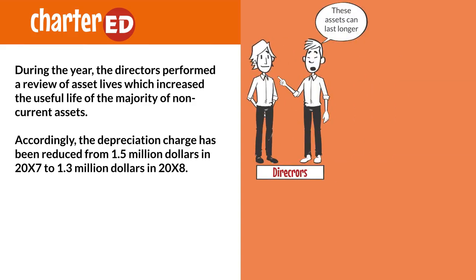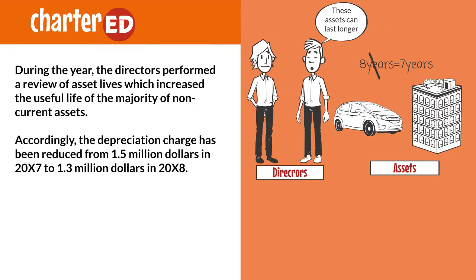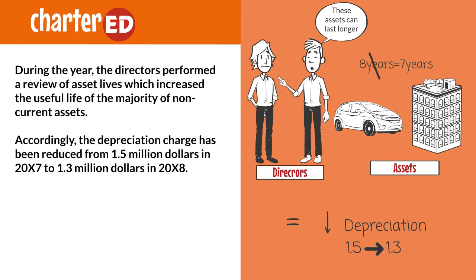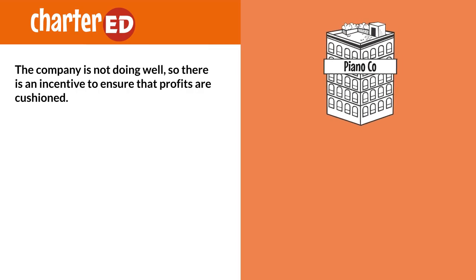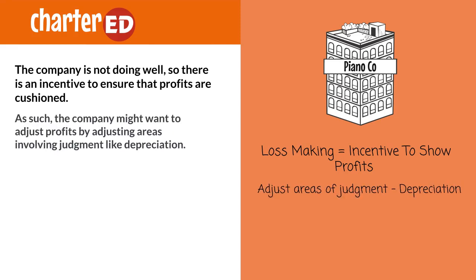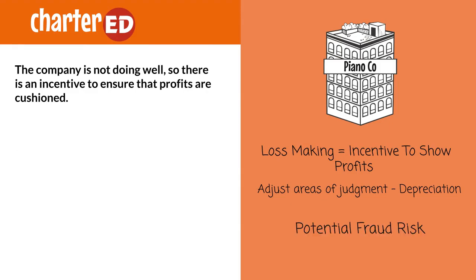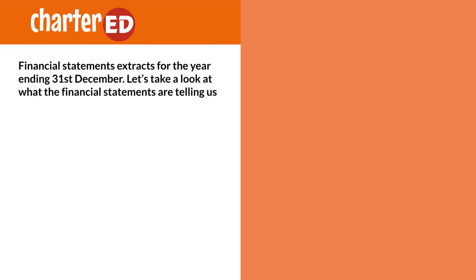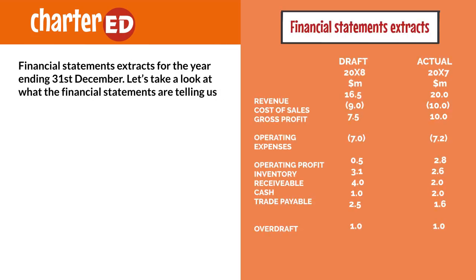During the year, the directors performed a review of asset lives, which increased the useful life of the majority of non-current assets. Accordingly, the depreciation charge has been reduced from 1.5 million dollars in 20X7 to 1.3 million dollars in 20X8. Now, every time you see this happening, always question the directors' motives. The company is not doing well, so there is an incentive to ensure that profits are cushioned. The company might want to adjust profits by adjusting areas involving judgment like depreciation — remember what we learned in the chapter on fraud.